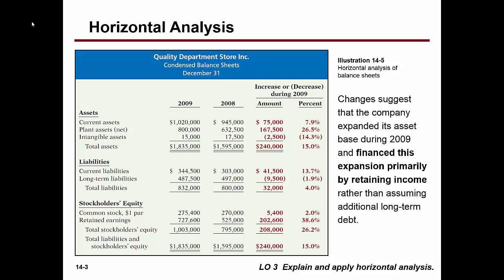Did you get 7.9% roughly? There — you just did a horizontal analysis. All we're doing is comparing one year to the next and seeing what the change was between those years.